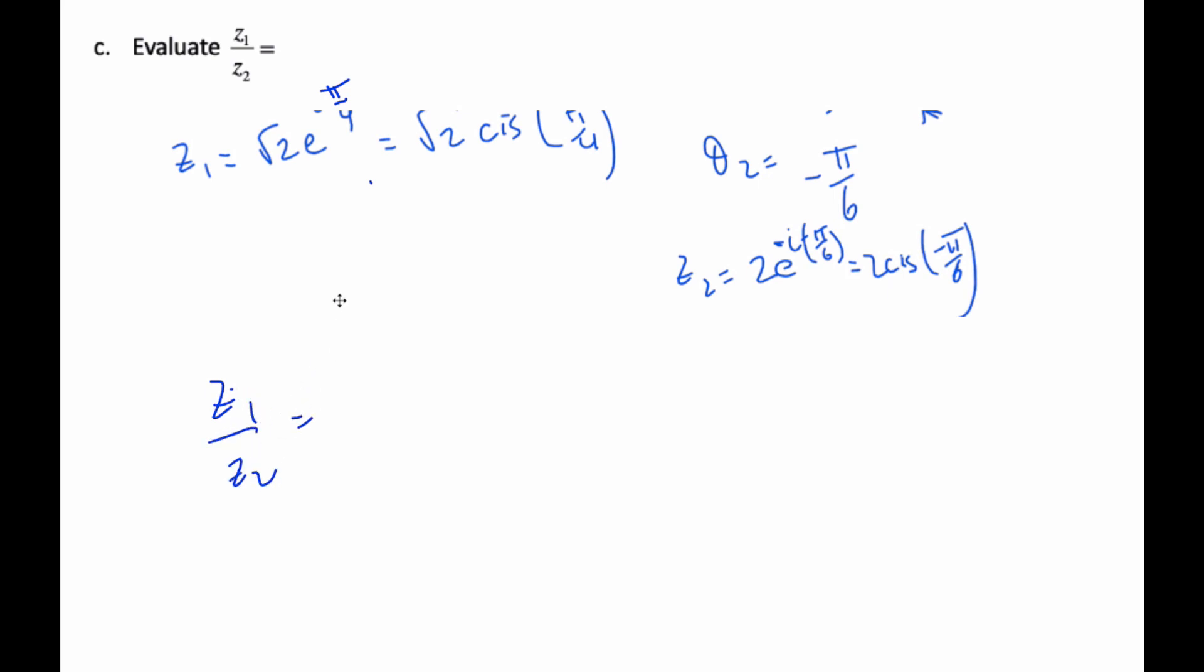So this is root 2 over 2 e to the i pi over 4, it's positive I remember, and 2 e to the i negative i pi by 6 from here.